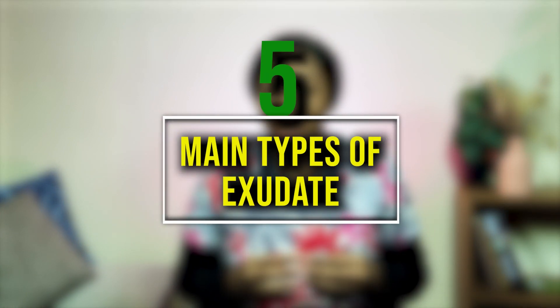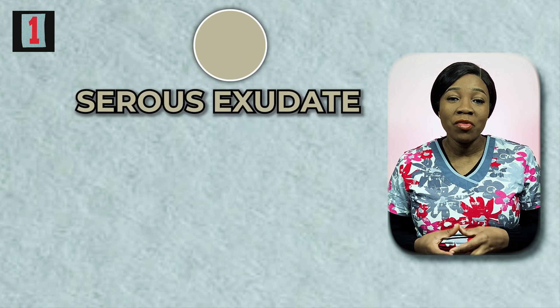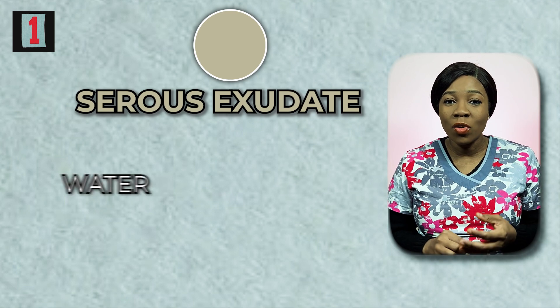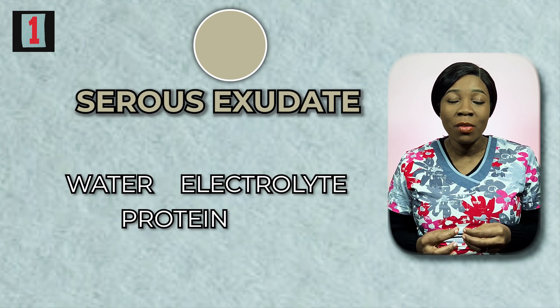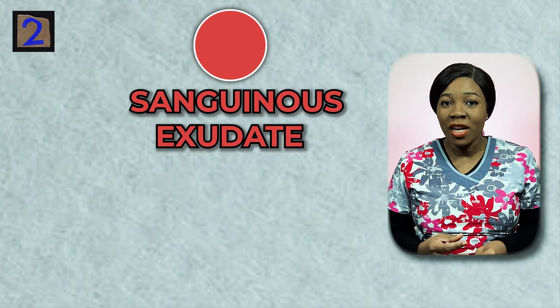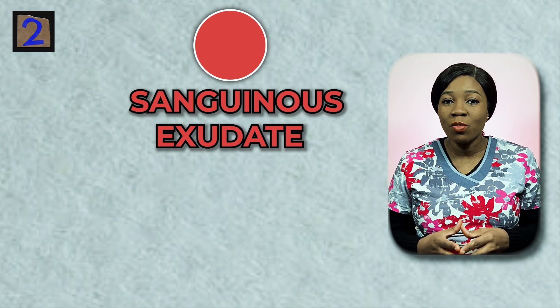Exudate also provides the necessary nutrients and growth factors for tissue repair. However, excessive or abnormal exudate production can sometimes indicate an underlying health issue or impaired wound healing. There are five main types of exudates, classified based on their composition and appearance. First, serous exudate is clear and watery, similar to the fluid found in blisters, mainly containing water, electrolytes, and small amounts of protein. Second, sanguineous exudate is red and contains a large amount of red blood cells, indicating significant bleeding or hemorrhage in the wound.